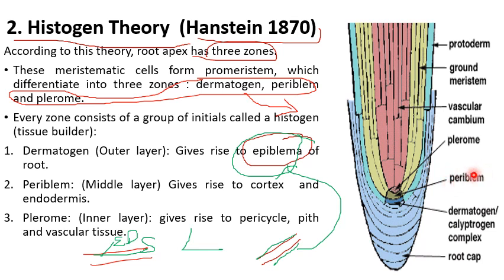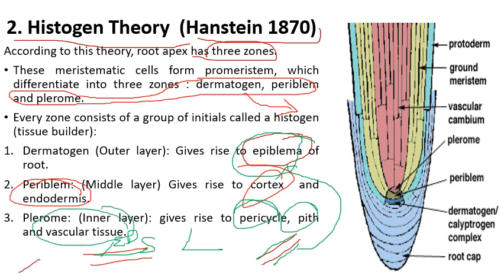Periblem, the middle layer, will give rise to cortex and endodermis. Next to that, pleurome — the inner layer — will give rise to pericycle, pith, and vascular tissue. Vascular tissue includes xylem, phloem, and cambium. Pericycle, pith, and cortex are mostly rich in parenchyma cells. This histogen theory explains both the root and shoot apical meristem — that is, it is applicable to both root and shoot apical meristem.